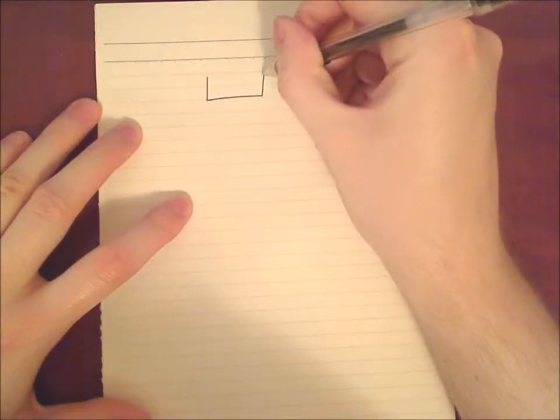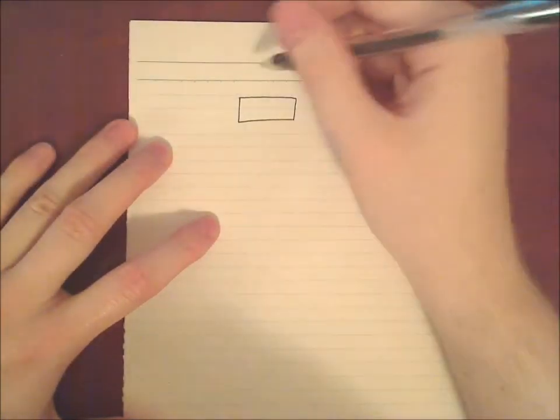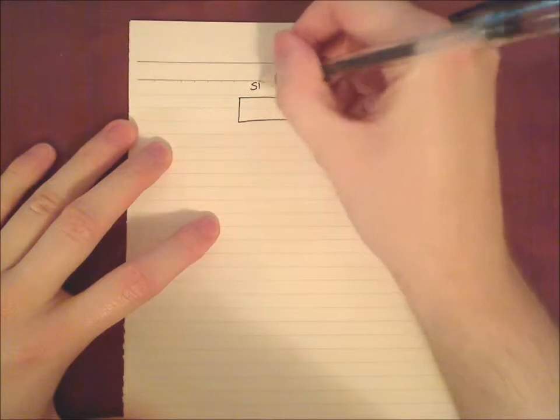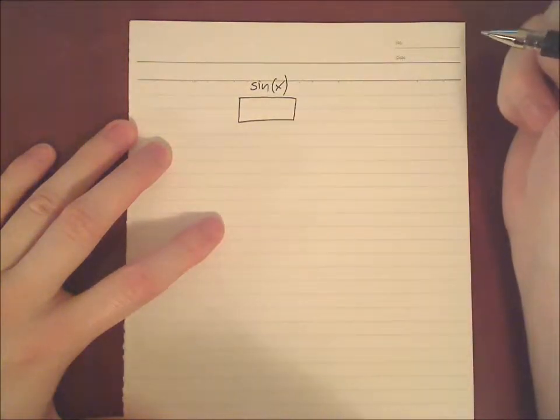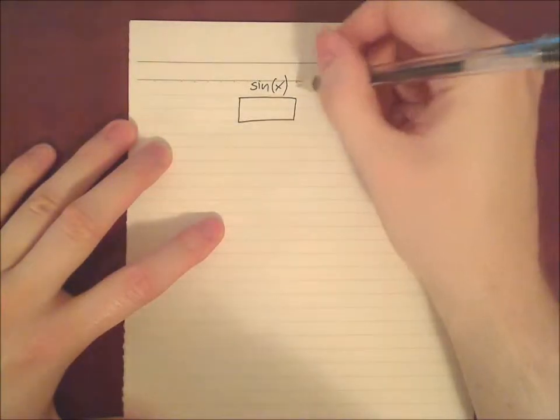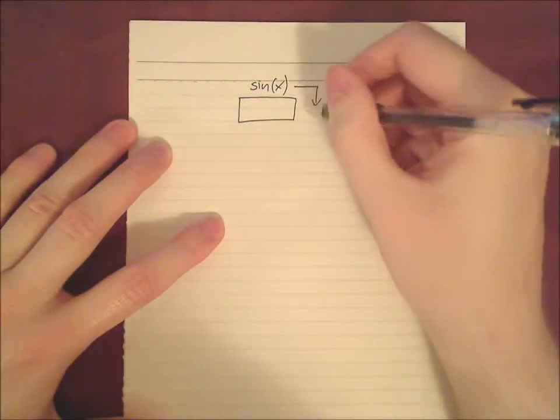How to differentiate sine and cosine? Actually, it's not very difficult. All you have to remember is a rectangle, which looks like the following. So this is our rectangle. And we start with sine at the top, sine. And if we differentiate sine, we are going to get cosine.